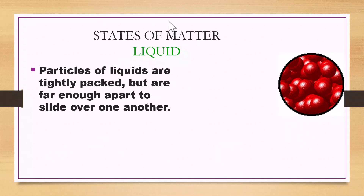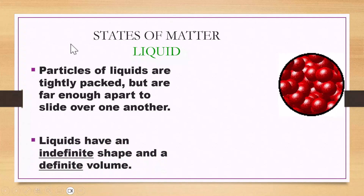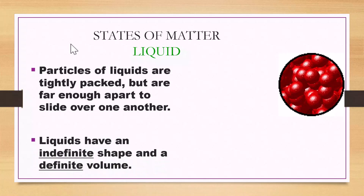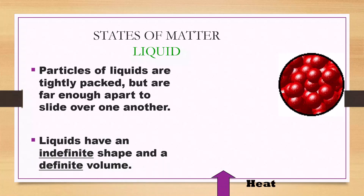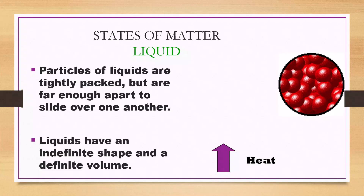When matter is at a liquid state, particles are still tightly packed but far enough apart to slide over one another. Liquids have an indefinite shape and a definite volume. When heat is applied to a liquid, it goes from a liquid to a gas.